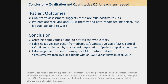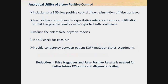False negatives for any patient who is harboring an EGFR variant means that they will receive chemotherapy first line, which has been proven to be less effective. Credit Valley Hospital includes a low positive control of 2.5% mutant allele frequency in all runs, helping them eliminate false positives. The low positive control also acts as a qualitative reference for true amplification so that low positive results can also be reported with confidence, reducing the risk of false negative reports. Recalling the proficiency testing data, false negatives and false positives were the greatest reason for failure.